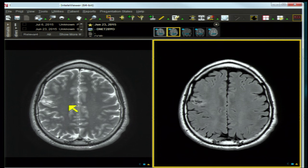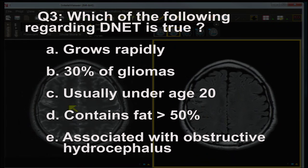Question three: which of the following regarding DNET is true? You should be able to get this by looking at the case. Note that you often cannot go back to prior questions, so you must memorize your previous answers. The choices are: A) grows rapidly, B) 30% of gliomas, C) usually under age 20, D) contains fat in greater than 50%, E) associated with obstructive hydrocephalus.